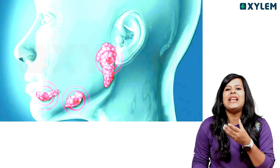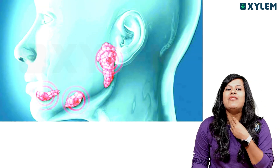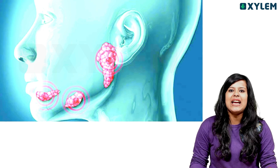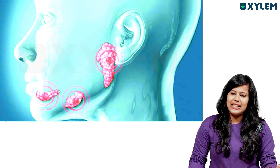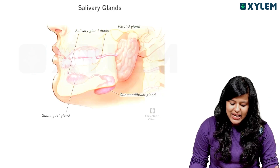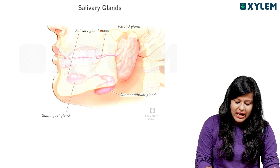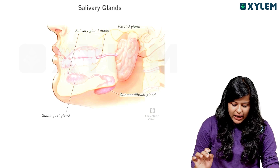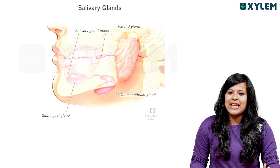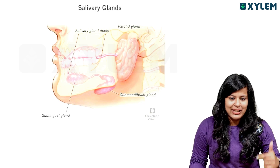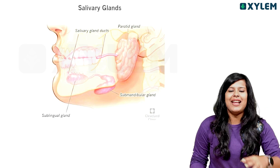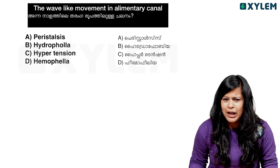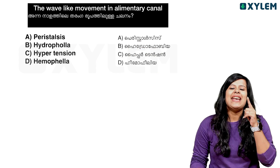So let's start here. We have the salivary glands. We have the salivary glands — that is important. We have to understand this question. Ready? Set.